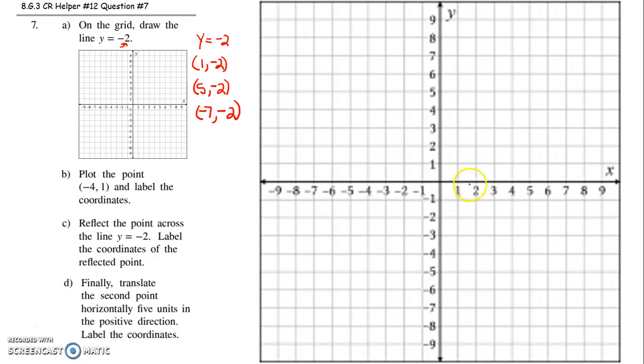So let's take a look at 5, negative 2. That would be 5 to the right, 2 down. Let's look at 1, negative 2. Start at the origin, 1 to the right, 2 down. Let's take a look at negative 7, negative 2. 7 to the left, 2 down. So this is this beautiful horizontal line, the line y equals negative 2.